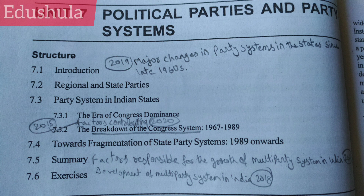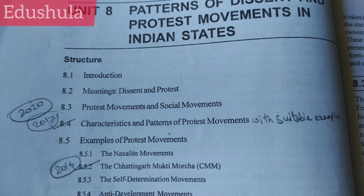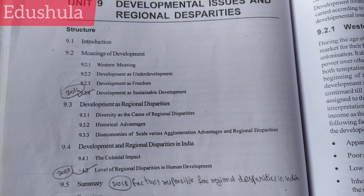Factors Contributing to the Breakdown of the Congress System. Factors Responsible for the Growth of the Multiparty System in India. Development of the Multiparty System in India. From Unit 8: Characteristics and Patterns of Protest Movements with suitable examples. Chhattisgarh Mukti Morcha.